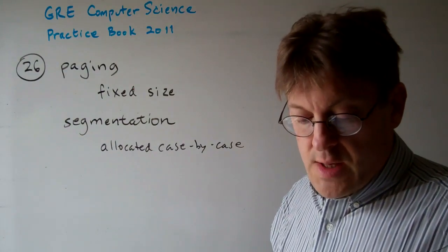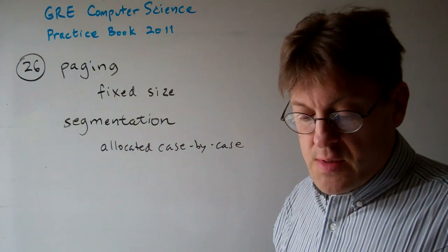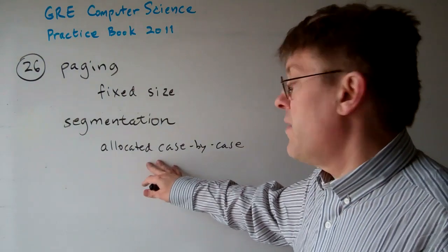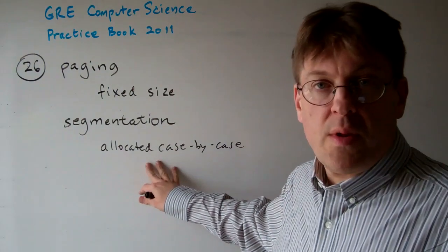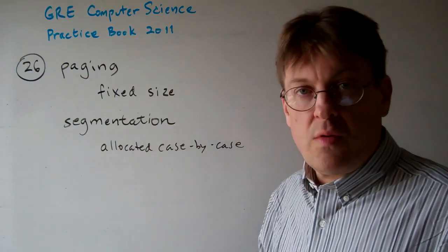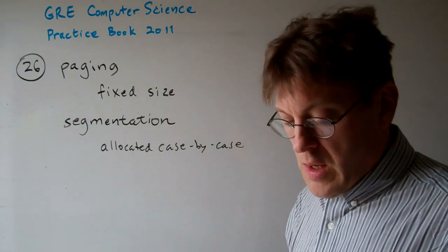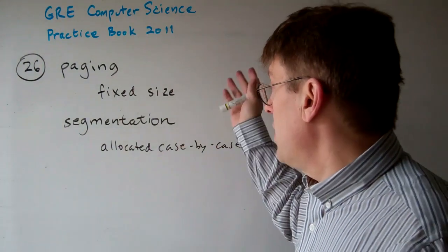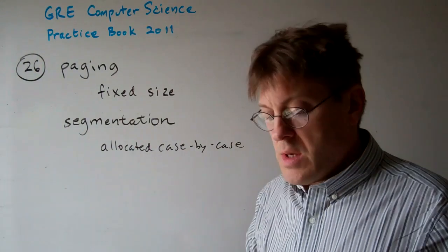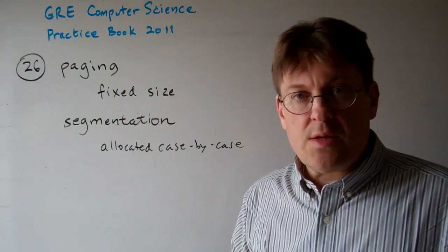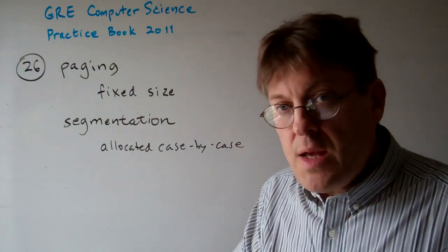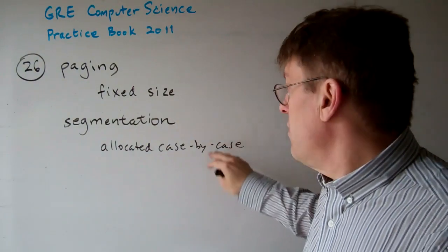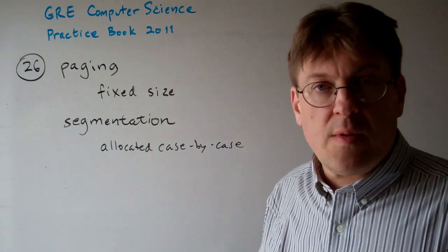E says page tables are typically very small, whereas segment tables are always very large. With segmentation there's a lot of variability — there are no set rules, and page tables can be any size. Anyway, the answer is A. Key concept: fixed-size pages versus variable-size segments.